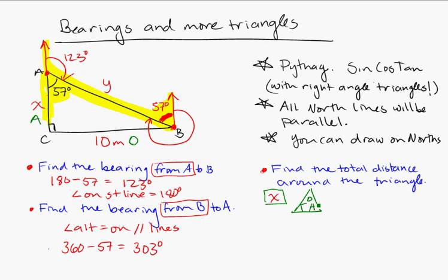T, O, A. And I'm looking for the adjacent, so I'll cover it up. So, X is going to be equal to the opposite, 10, divided by tangent of 57. Which is equal to 6.5 meters, if we round it.